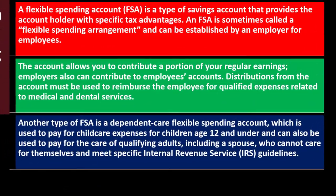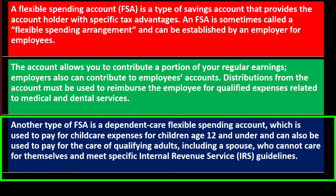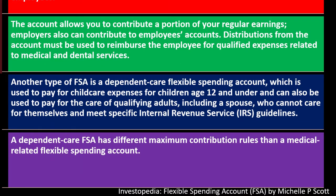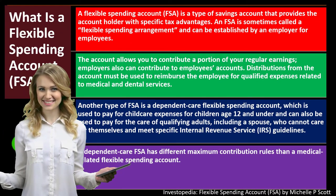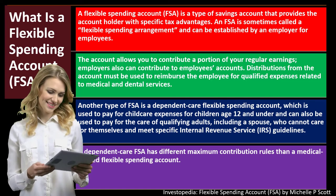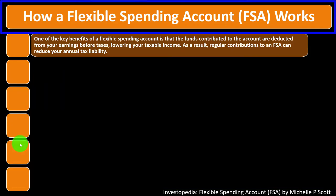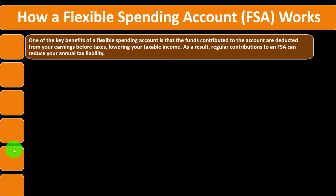Another type of FSA is a dependent care flexible spending account, which is used to pay for child care expenses for children age 12 and under, and can also be used to pay for the care of qualifying adults — including a spouse who cannot care for themselves — and must meet specific IRS guidelines. A dependent care FSA has different maximum contribution rules than a medical-related FSA, so you want to make sure you're within the rules.